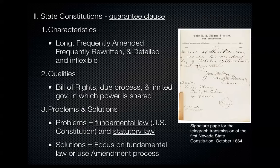The excessive detail in state constitutions makes it hard to adapt during times of change. In terms of qualities: every state constitution protects civil rights through its own Bill of Rights. Every state constitution prescribes respect for equality of citizens and provides for due process of law — meaning you have the right to go to trial and have your case heard. Every state constitution also provides a limited state government in which powers are shared among a legislative branch, an executive branch, and a judicial branch, just like the U.S. Constitution.